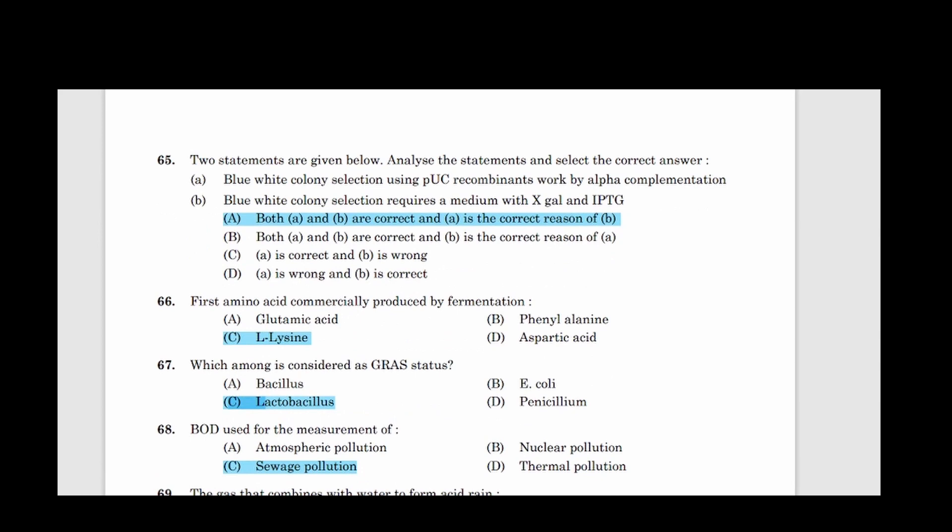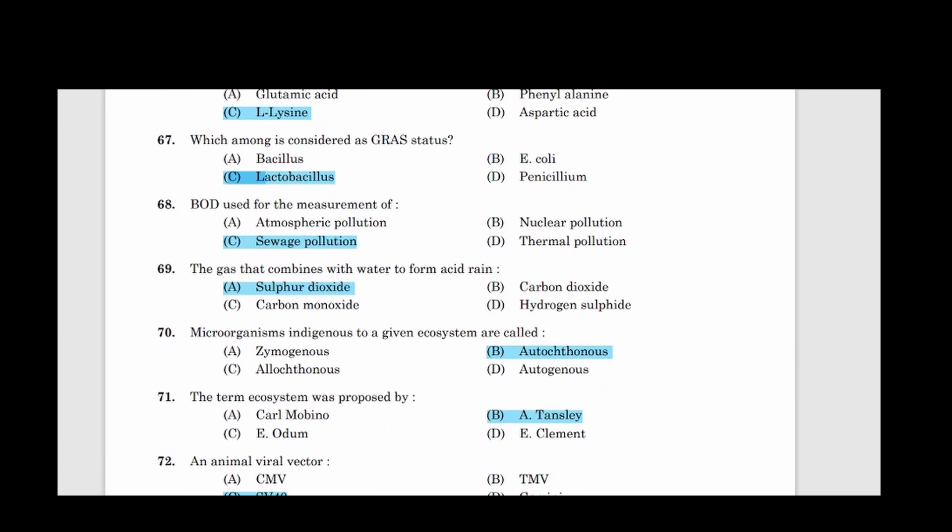65: Two statements are given below. Analyze the statements and select the correct answer. Answer option A, Both A and B are correct and A is the correct reason of B. 66: First amino acid commercially produced by fermentation. Answer option C, L-lysine. 67: Which among is considered as GRAS status? Answer option C, Lactobacillus. 68: BOD used for the measurement of? Answer option C, Sewage pollution. 69: The gas that combines with water to form acid rain. Answer option A, Sulphur dioxide.